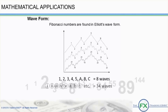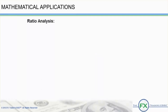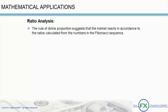Let's journey back in time again to Fibonacci. We learned that Fibonacci numbers are found in Elliott's Wave form. We've also learned that waves unfold in every time frame in more or less the same way as a result of the fractal nature of the market. For example, the basic 5-wave impulse and 3-wave corrective always subdivides into Fibonacci numbers. Fibonacci ratios are the most important use of the sequence. The rule of divine proportion suggests that the market reacts in accordance with the ratios calculated from the numbers in the Fibonacci sequence.